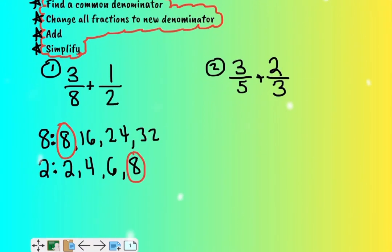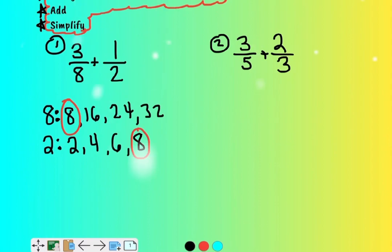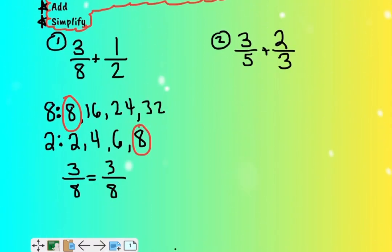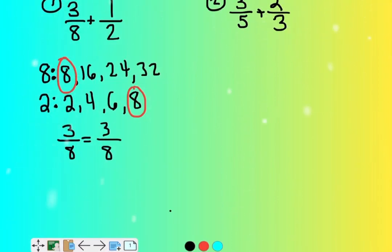So now what I need to do is I need to change my three eighths into eighths. Well, that's pretty easy because it's already an eighth. But what about my one-half? I need to say, if I'm changing this to eighths, what do I have to multiply my denominator by to get that eight? Four. And whatever you do to the bottom, you've got to do to the top.